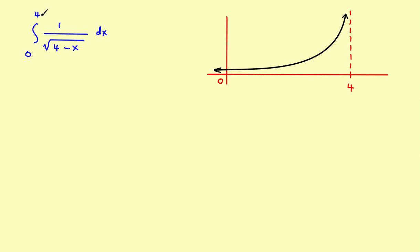The problem looks like this: you've got the integral from 0 to 4 of 1 over the square root of 4 minus x. If you were to graph it, the graph goes toward positive infinity as x approaches 4, because if x ever gets to 4, you'd have 4 minus 4 — division by zero. So you can't find the integral all the way to 4 directly, and you'll have to follow the process we've used before.